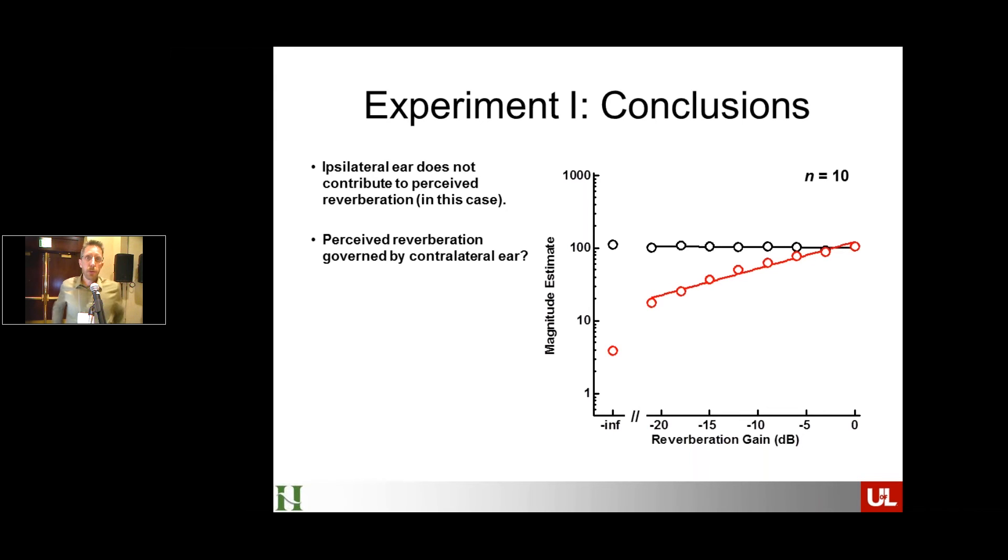Okay, so taking those two results together, this is kind of an interesting result. That, to us, seems to say pretty clearly that the ipsilateral ear, when you have a sound off to the side, is not contributing to the perception of reverb in that case, because it's constant. So now the question becomes, well, what is contributing to the perception of reverb? Of course, could be the sound in the contralateral ear, because in the hybrid case, that is constant.